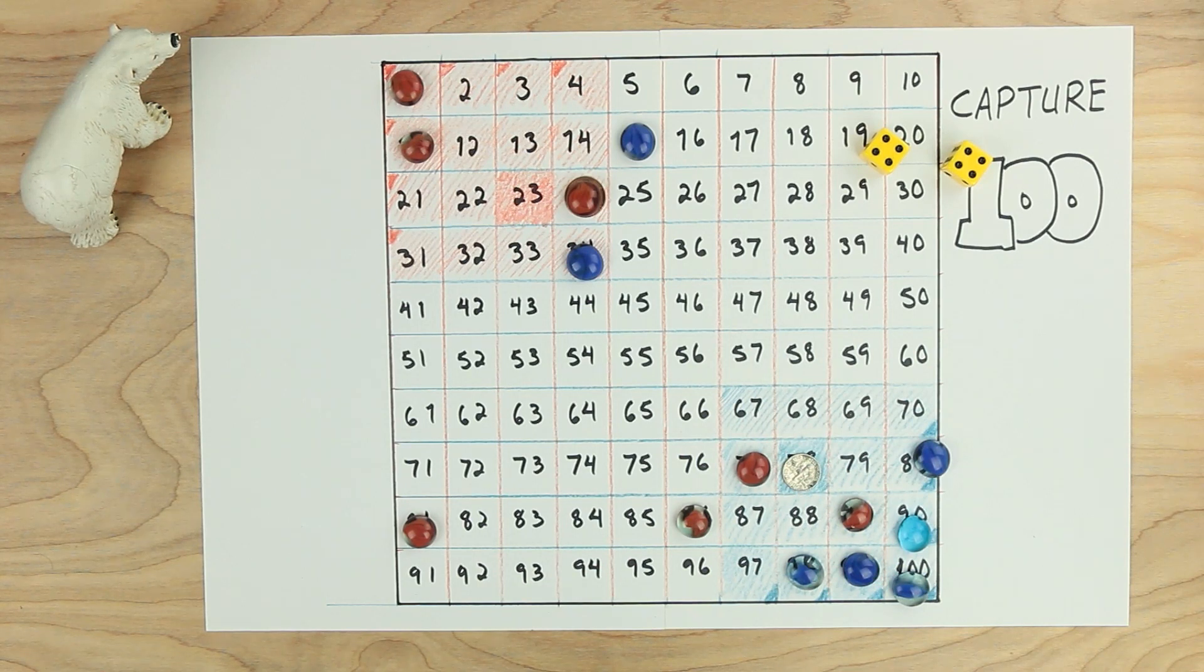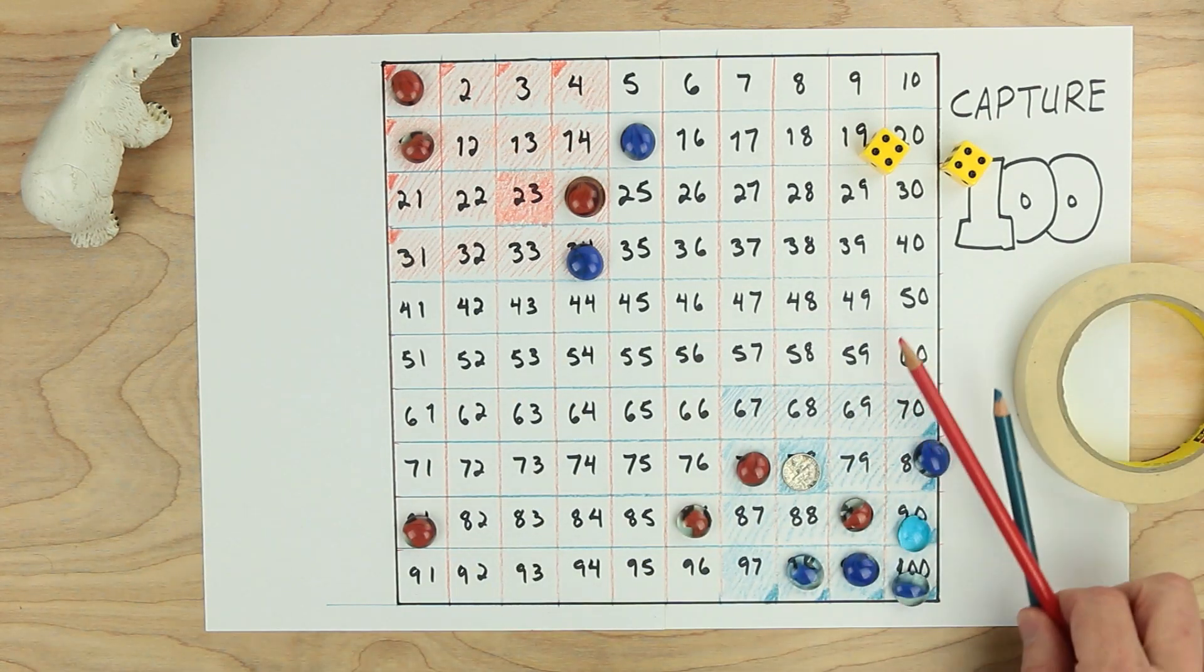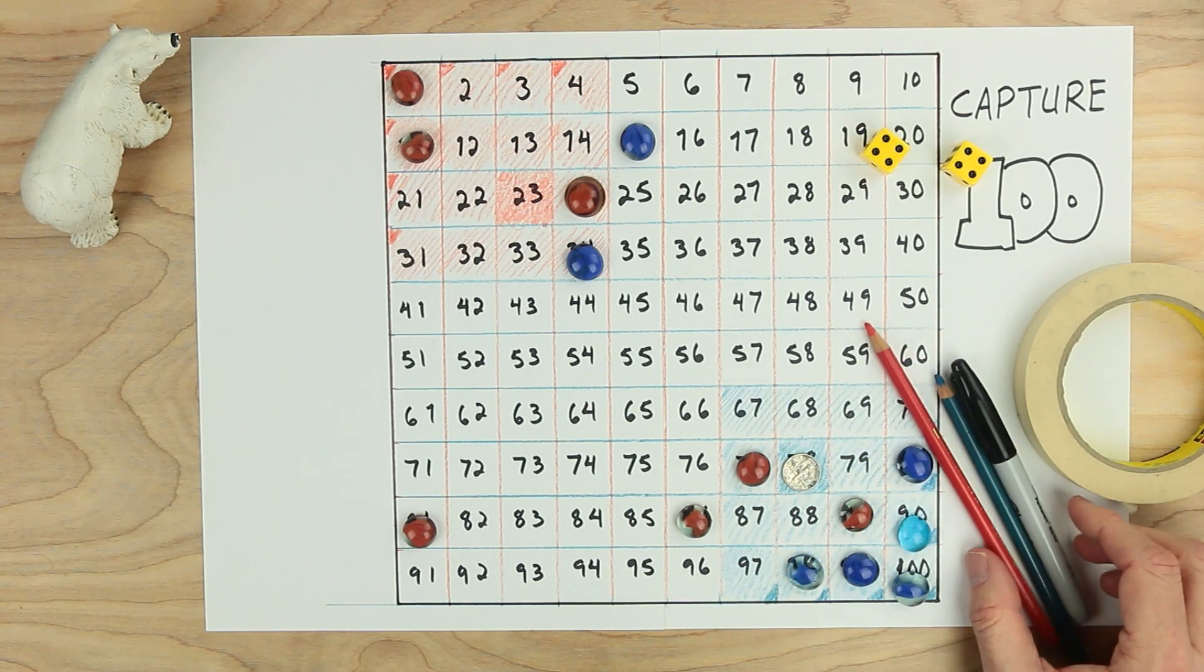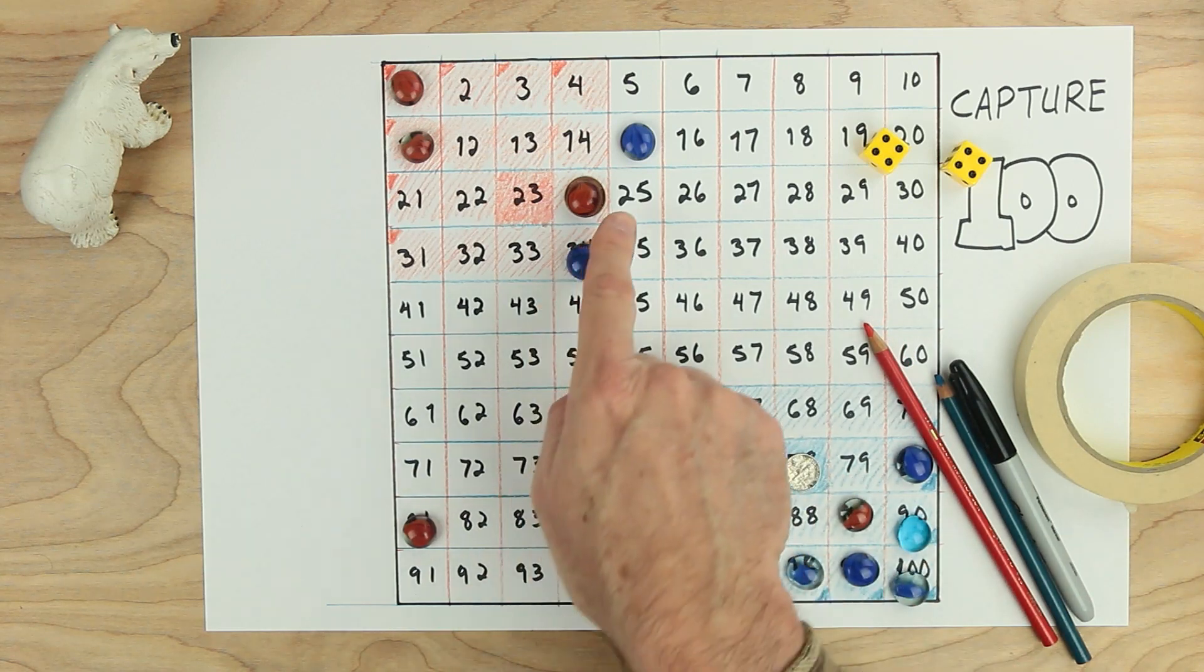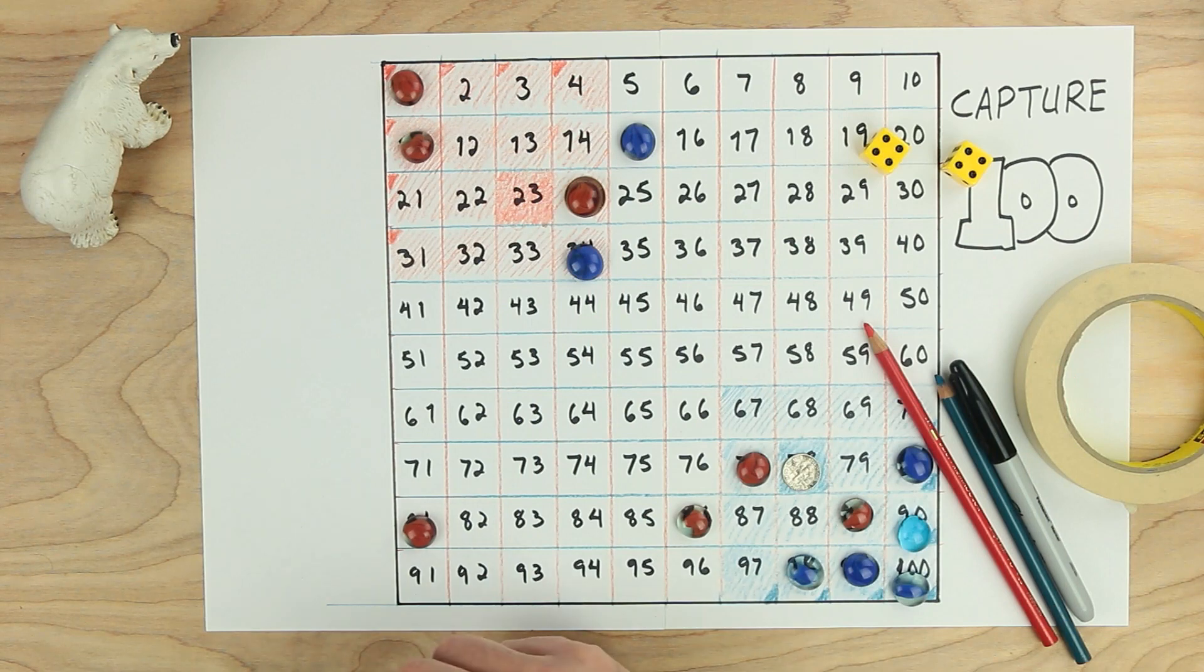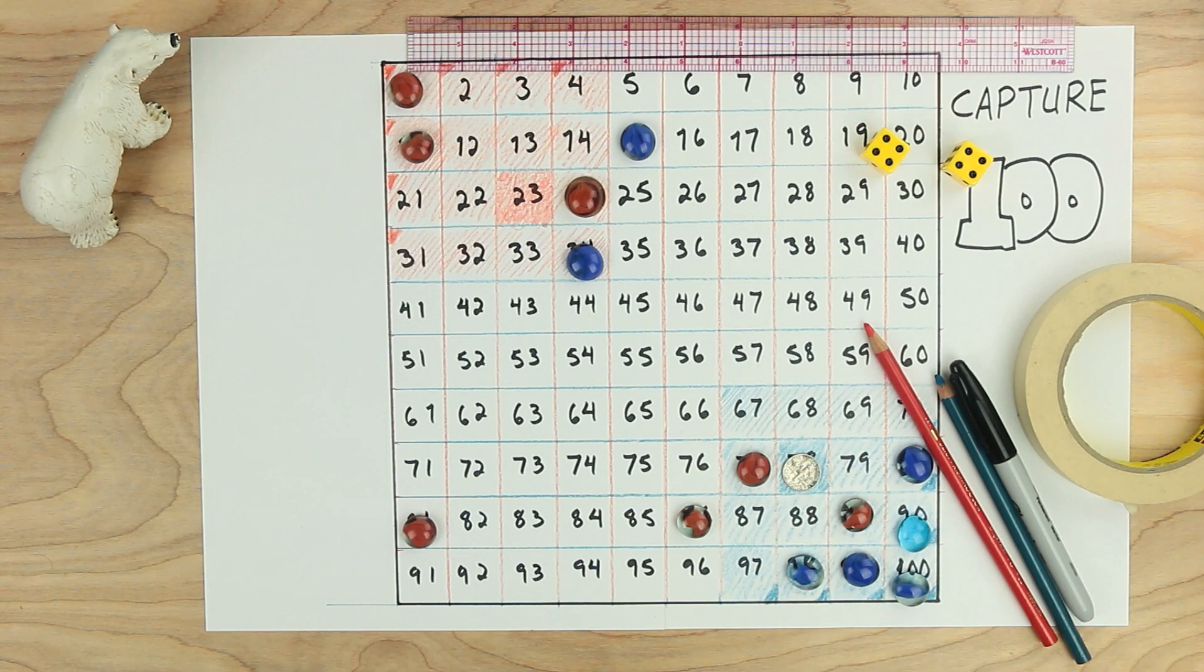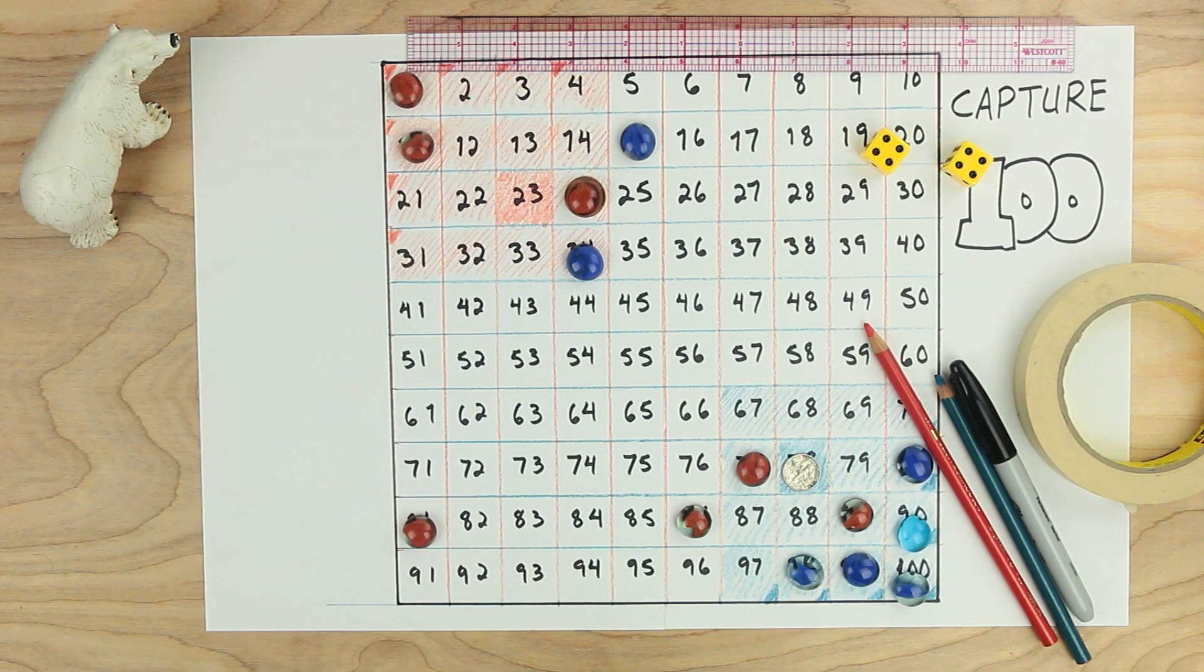For this game, you needed two pieces of paper, maybe a little tape, colored pencils would be good, something to write with, playing pieces, some treasure, a couple of dice. What else do we need? Oh, we'll need a ruler, definitely. There's still something else though, isn't there? Oh, we'll need the bear. Do enjoy this game.